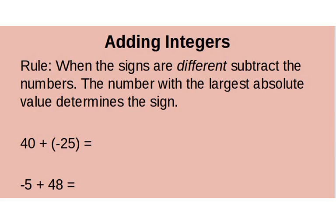The second rule for adding integers is a little trickier. When the signs are different, you subtract the numbers, then look at which has the largest absolute value — that tells you the sign. For example, 40 plus negative 25: the signs are different, so I subtract: 40 minus 25 is 15. The absolute value of 40 is 40, and the absolute value of negative 25 is 25. Since 40 is farther away, the answer is positive 15.